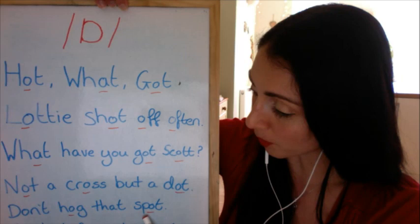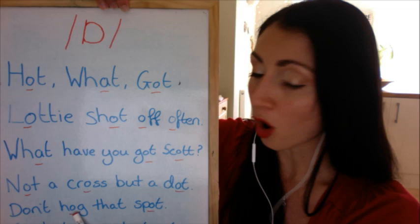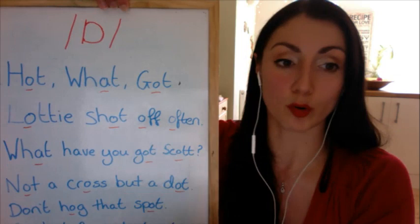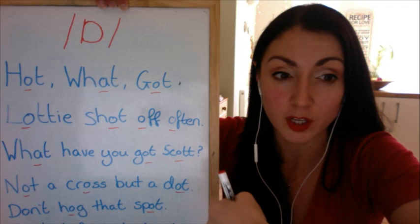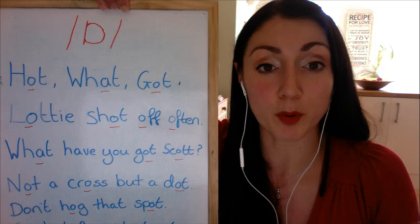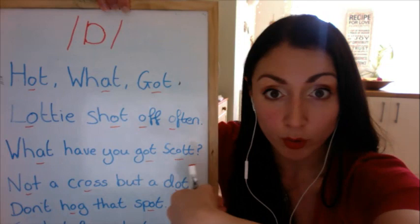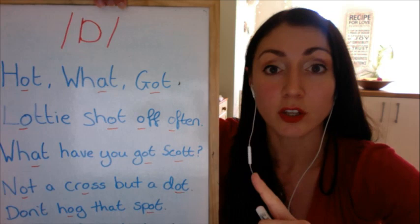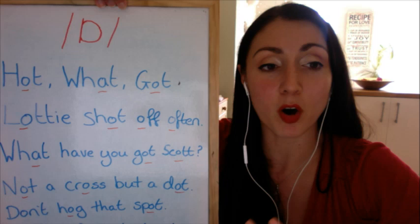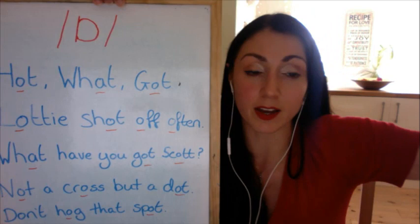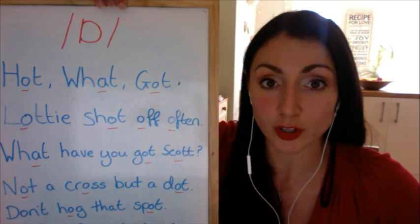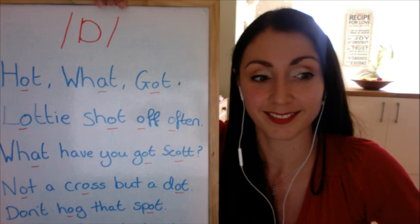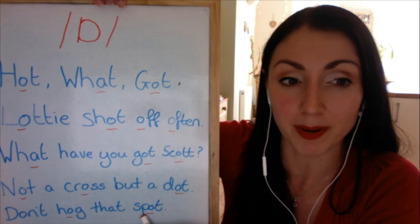Next: 'Don't hog that spot.' If you hog something, you keep it to yourself — you take possession of it and don't share. For example, if a child has all the toys and won't let others play, they're hogging the toys. If you're lying across the whole couch so no one else can sit down, you're hogging the couch. 'Spot' means place. So: 'Don't hog that spot' — don't take up that place for yourself.